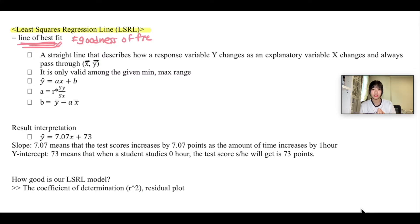The least square regression line or LSRL is the straight line that describes how a response variable y changes as an explanatory variable x changes, and always passes through x̄, ȳ, or the mean x and mean y.